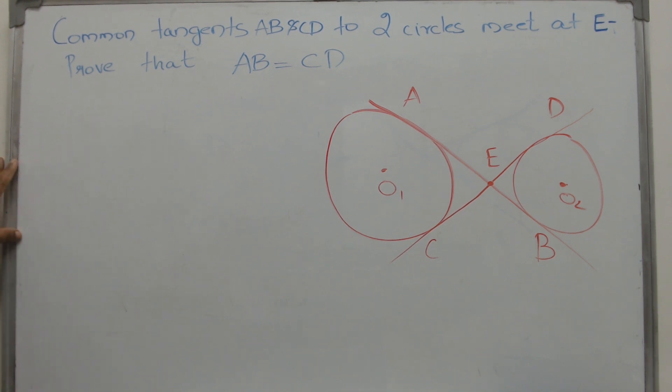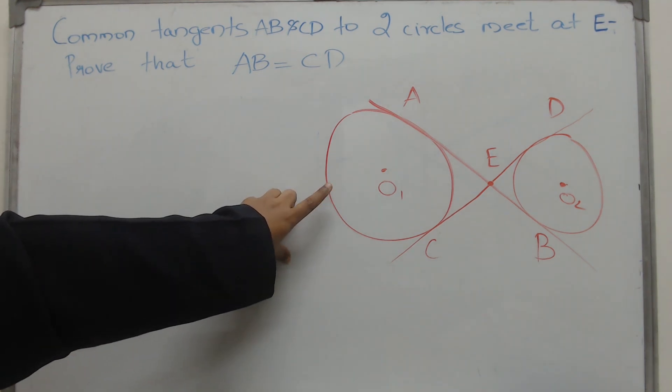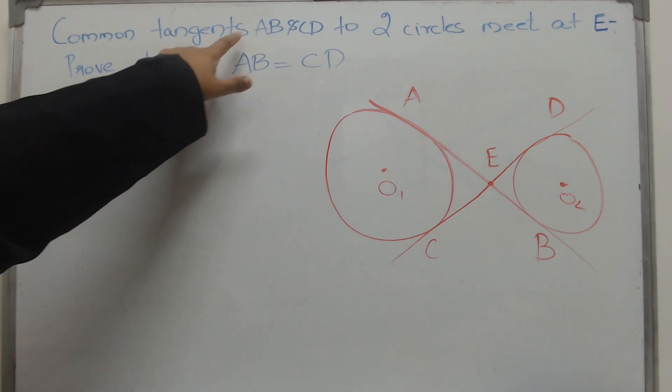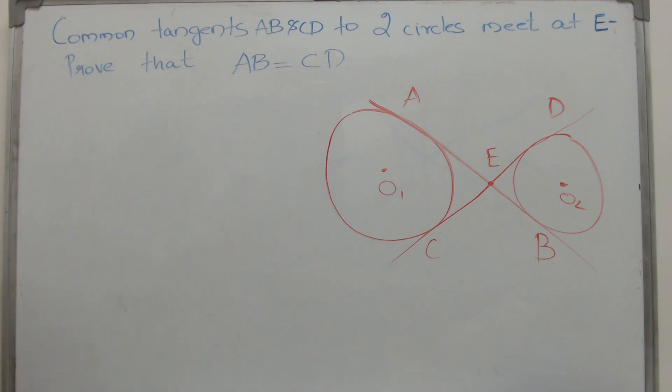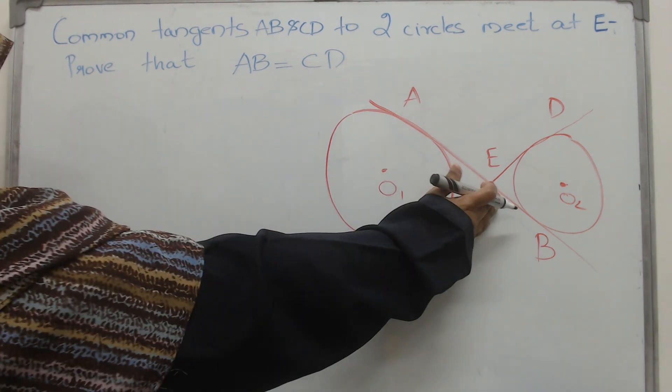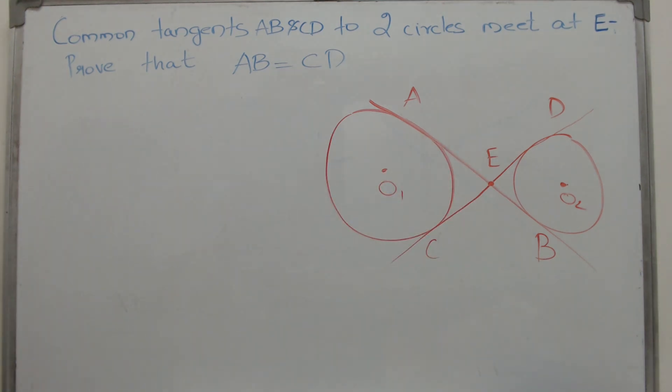Here we have a question based on circles. We are given two different circles and two common tangents AB and CD which meet at the point E. Now we have to prove that AB is equal to CD.